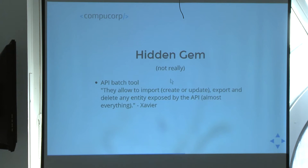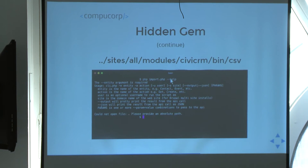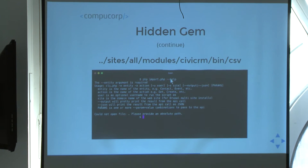There's the API batch tool, which I won't go into details on. What we generally tend to use a lot is this PHP import function. It comes with every distribution of CiviCRM. If you look under the CiviCRM root, it's located under sites/all/modules under the CiviCRM root under bin/csv, and there should be three functions there: import, export, and delete.